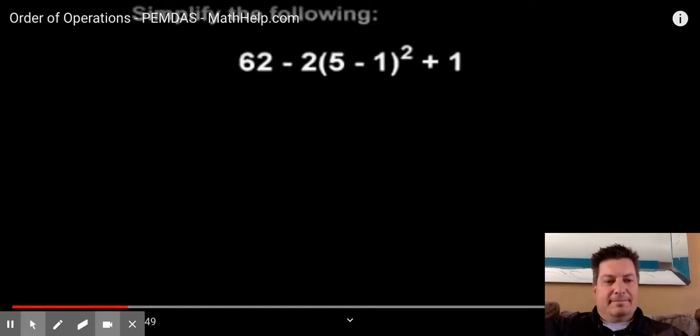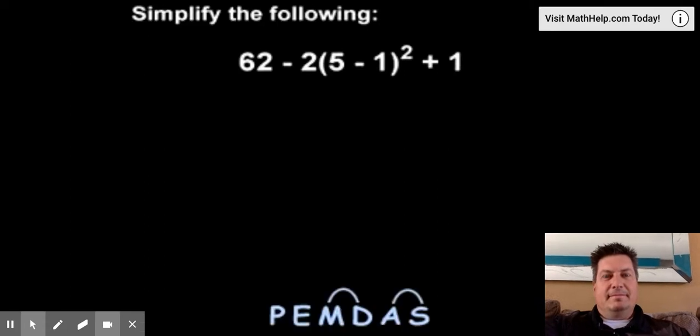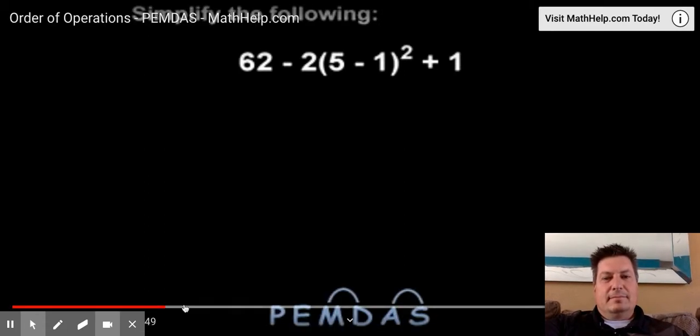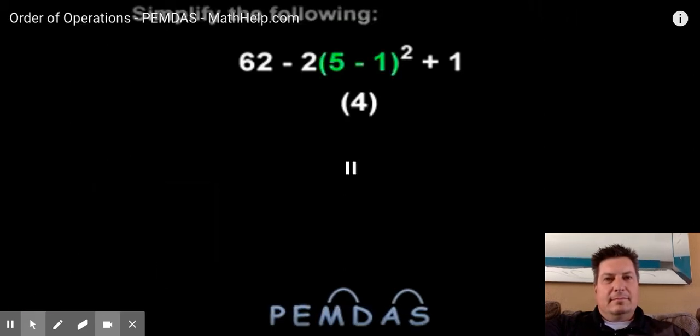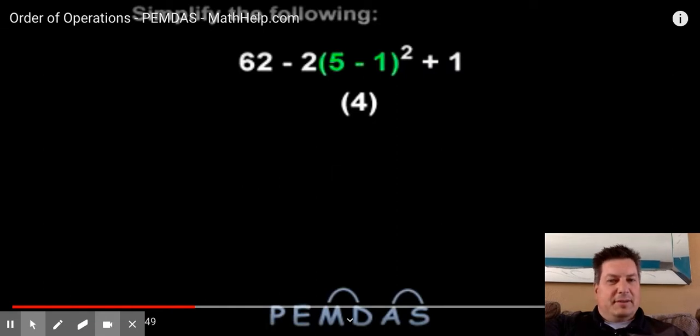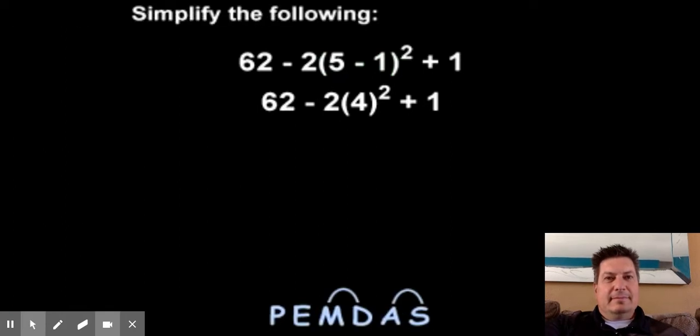According to the order of operations, or PEMDAS, we first simplify what's inside the parentheses. So here we have 5 minus 1, which is 4. P stands for parentheses. So we rewrite the problem as 62 minus 2 times 4 squared plus 1.